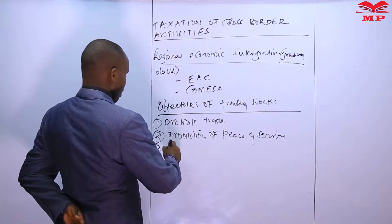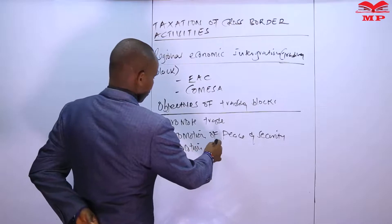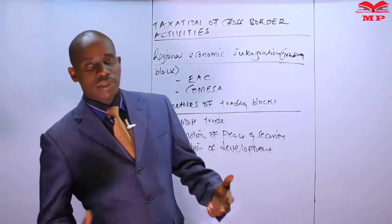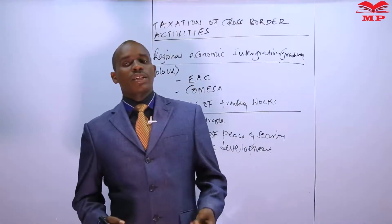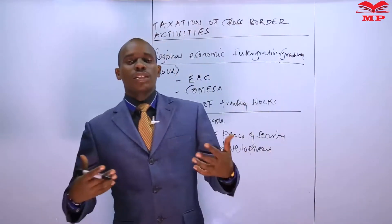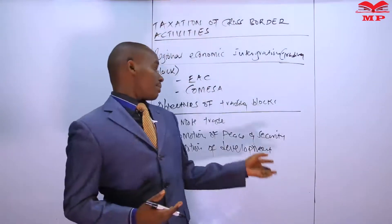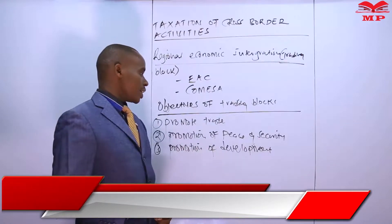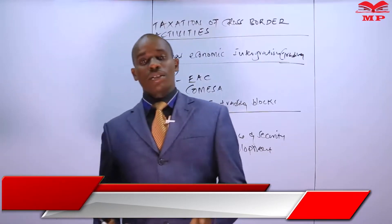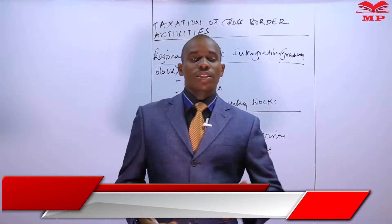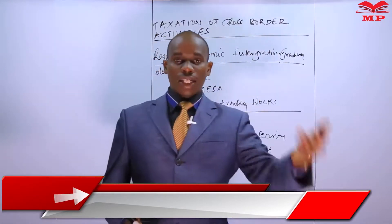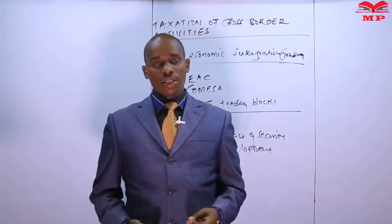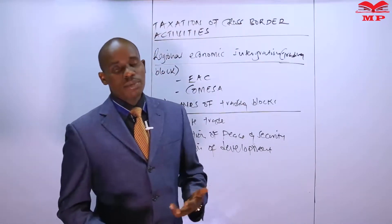Objective number three is the promotion of development among member countries. We need to interconnect countries to facilitate trade. If countries fail to join hands, it will be very difficult to construct, for instance, a road or railway linking another country. But when countries have joined hands, constructing a railway that interconnects all members of the trading block becomes much easier.